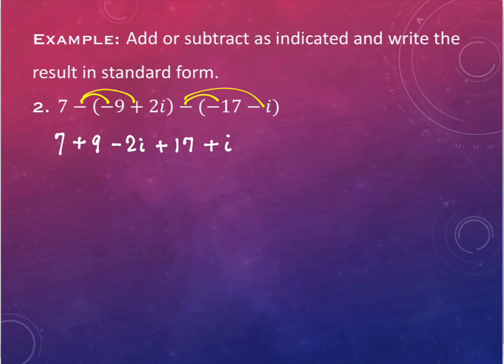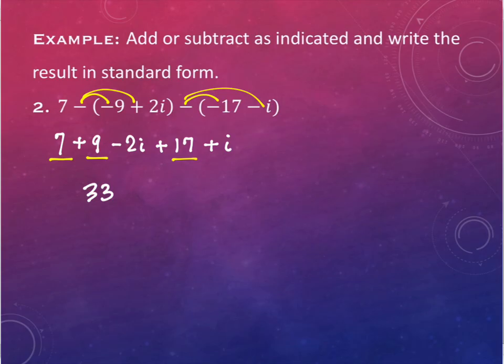All right, we're going to combine the pieces now. We're going to find all the real number pieces. I have 7, 9, and 17. If we add those together, we get 33. And then we're going to do the imaginary components. I have the negative 2i and the positive i, which gives me negative i. And we're done.